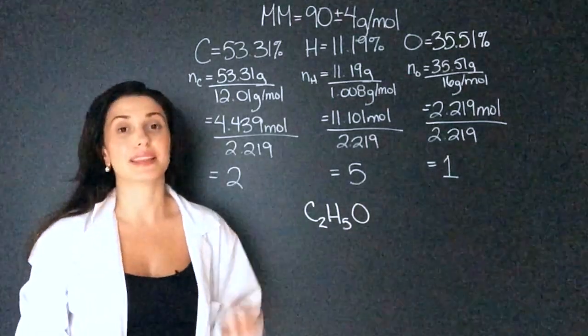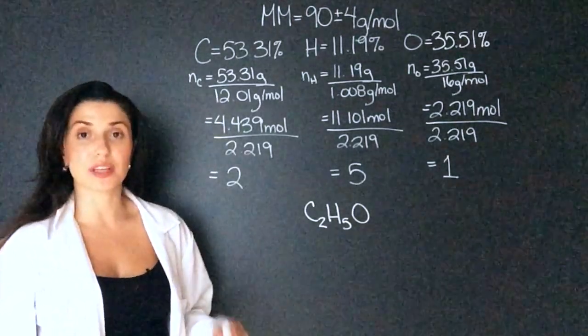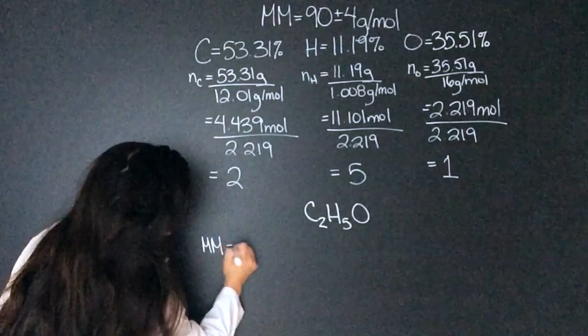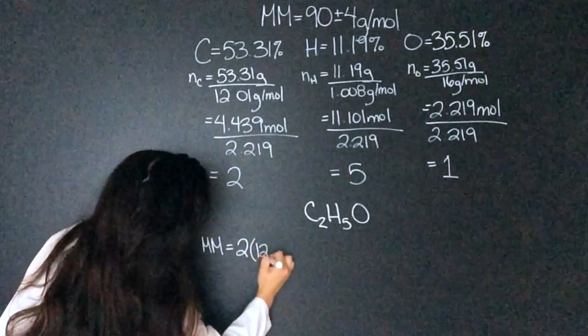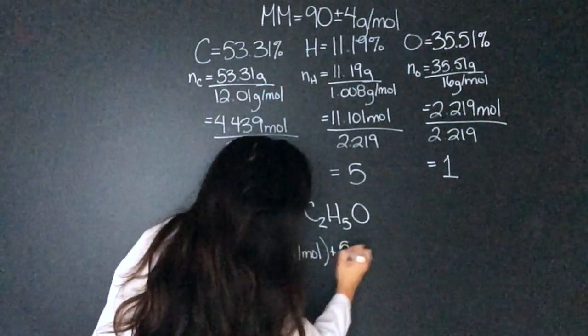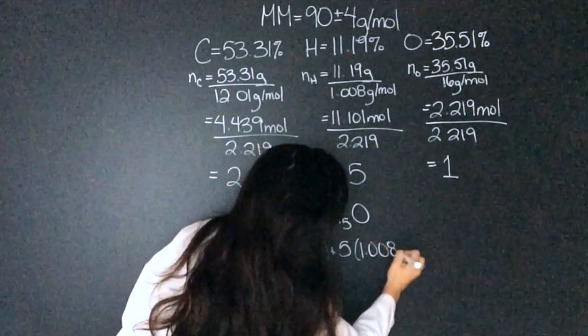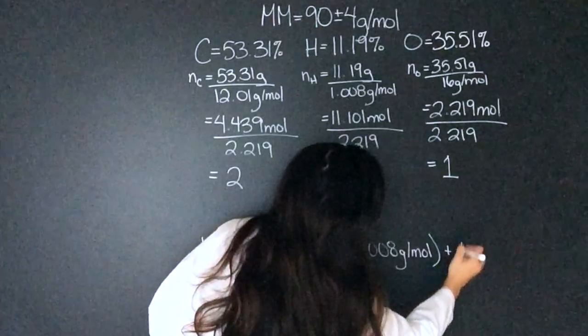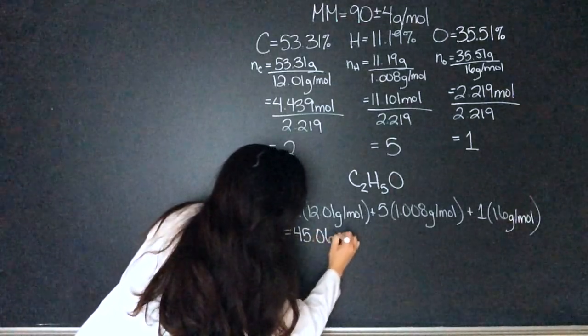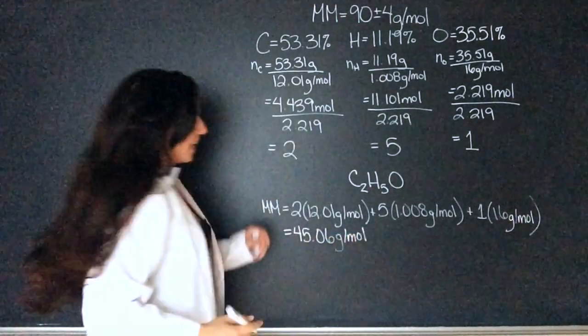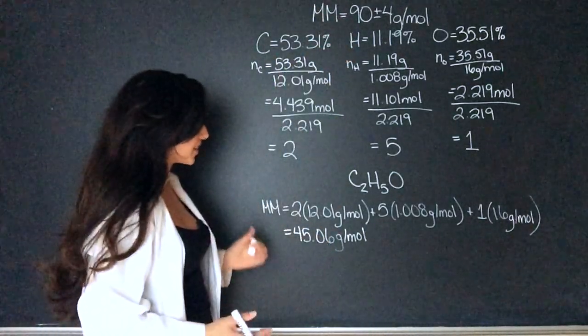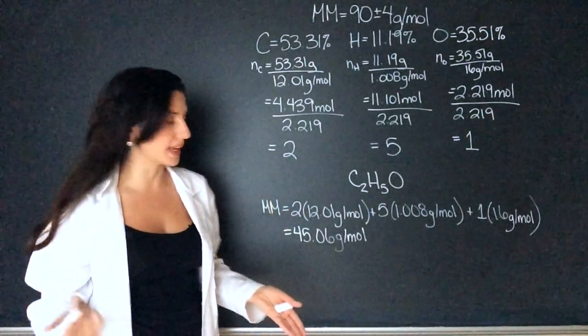Now let's find the molecular formula. So to find the molecular formula, first step is calculate the molar mass of the empirical formula. So the molar mass is going to be 2 carbons, 12.01 plus 5 hydrogen plus 1 oxygen. I get 45.06 grams per mole. This is not 90 plus or minus 4 grams per mole. However, I know that 45 is half of 90. So let's try multiplying it by 2.